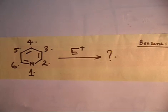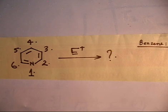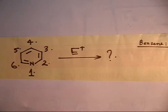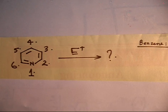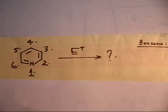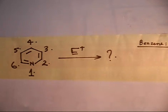To get the answer, first attack on position 2 and draw the resonating structures, then attack on position 3 and draw the resonating structures, then attack on position 4 and draw the resonating structures. Compare them — whichever gives a more stable carbocation intermediate, the attack will happen on that carbon. Let me give you two minutes so you can make a rough sketch before we discuss the solution.